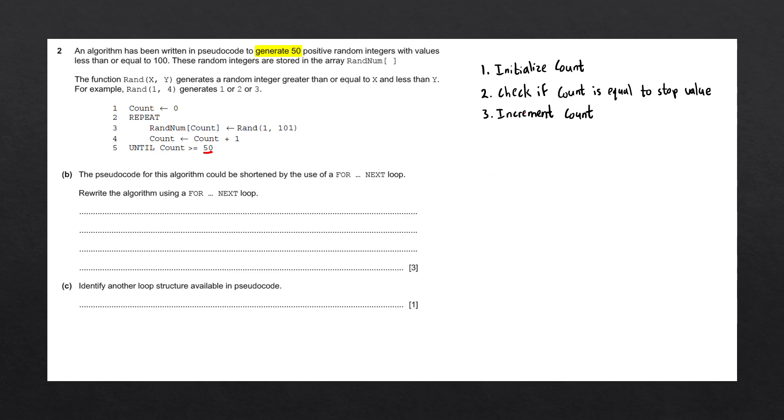If we look at the structure of a for loop, we can see that it does these three steps in one line. It initializes the count variable, it checks if the count variable is equal to the stop value, and it increments the count variable every time it loops around. We can take the structure, and we can simply substitute the start and the stop values that have been given, in order to loop 50 times.